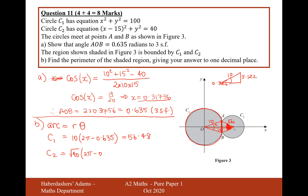Now we can find the half-angle at C2 using inverse sine: sin⁻¹(3.122 over root 40), which gives 0.516. Doubling that gives the full angle at C2: 1.033 radians.